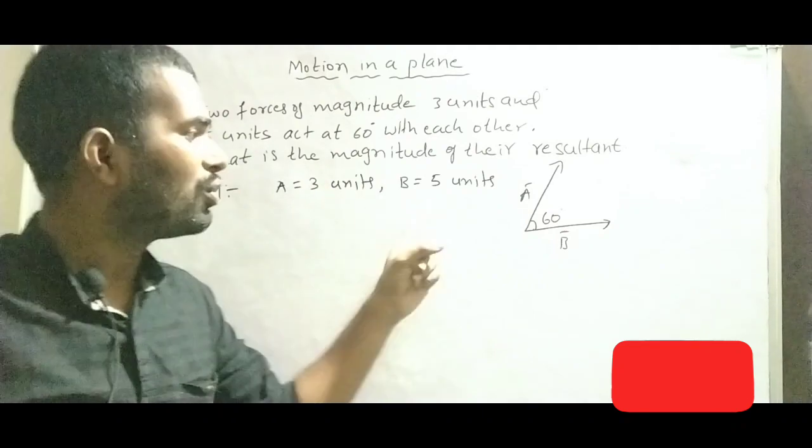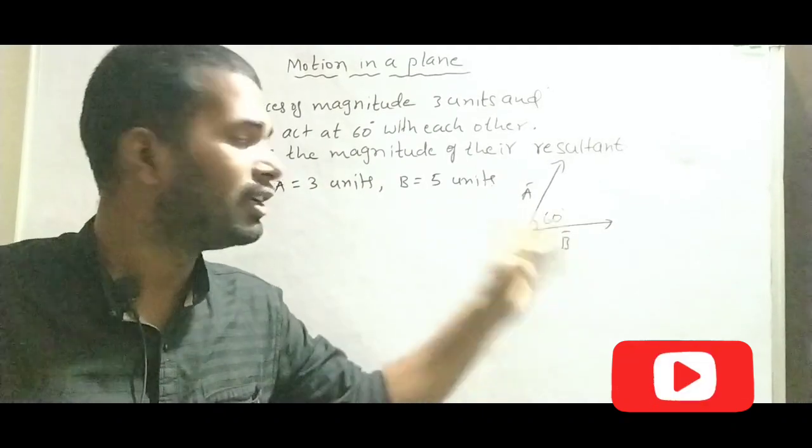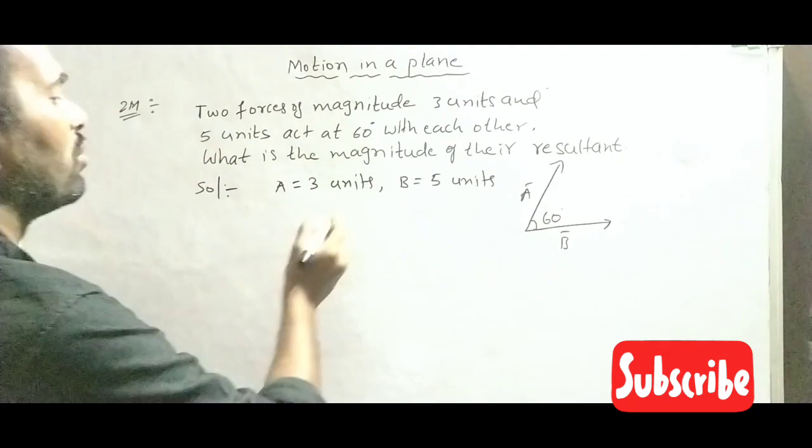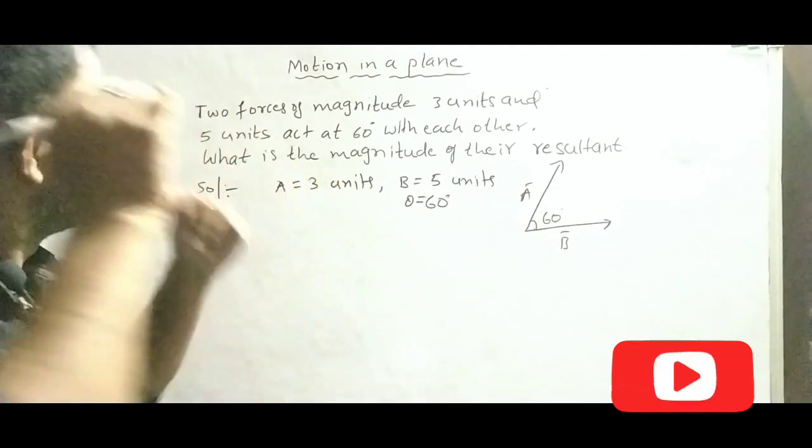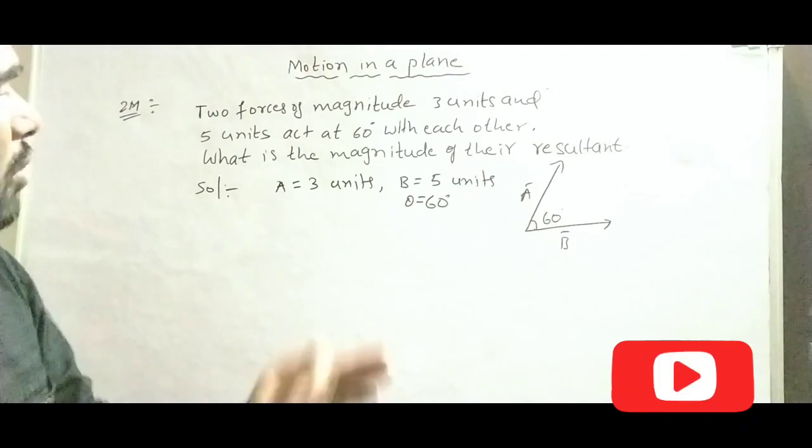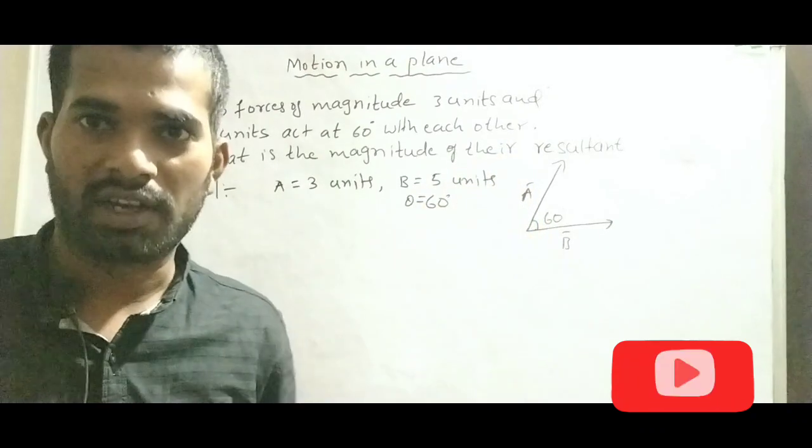A equals 3 units, B equals 5 units. A and B are acting at 60 degrees, means theta equals 60 degrees. So we have to find out the magnitude of their resultant.